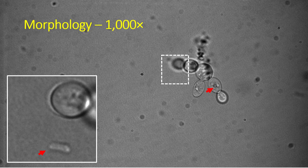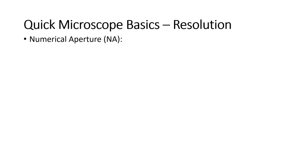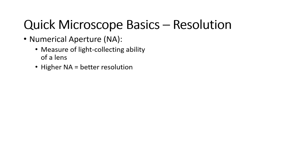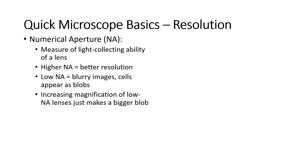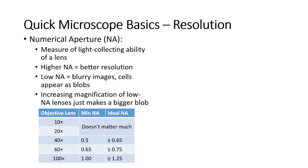Magnification isn't the only thing we need to worry about when selecting lenses. There's one rather important aspect to consider, and that's the resolution of the lens, determined by something called the numerical aperture — this is in addition to the magnification. Basically, the numerical aperture is a measure of the light-collecting ability of a lens. The higher the numerical aperture, the better the resolution. If we have a low numerical aperture lens, it will produce an image of a cell that's somewhat blurry — cells may just look like blobs. If we increase the magnification but keep the numerical aperture the same, the cells just get bigger but still look like blobs. You just have a bigger, blurrier image without additional detail or structure.